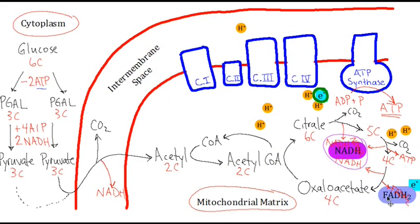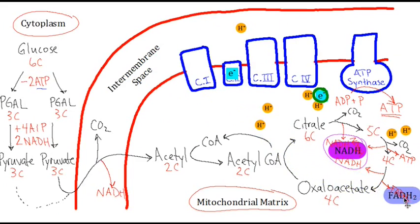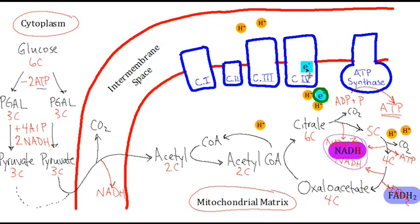Let's not forget the FADH2 molecules created in the Krebs cycle. These carry their electrons very similarly to NADH, and they drop off their electrons at complex II. As the electrons enter complex II and jump from one complex to the next — at complex III, hydrogen is attracted towards it, then the electron moves along and hydrogen moves out. This electron again jumps to help produce water and suck more hydrogen through. That hydrogen flows back through ATP synthase to help produce more ATP.